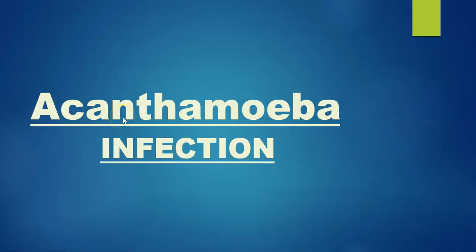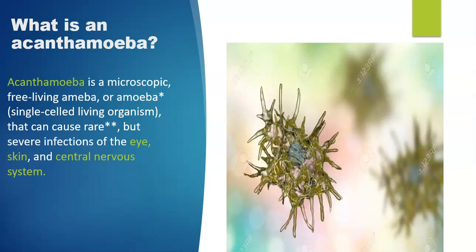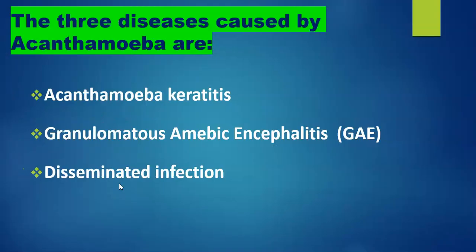Here we see in detail an infectious disease: Acanthamoeba infection. First of all, what is Acanthamoeba? Acanthamoeba is a microscopic free-living amoeba — a single-celled living organism — that can cause rare but severe infections of the eye, skin, and central nervous system. The amoeba is found worldwide in the environment, in water and soil. The three diseases caused by Acanthamoeba are Acanthamoeba keratitis, granulomatous amoebic encephalitis, and disseminated infection.